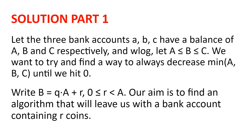Let the three bank accounts A, B and C have a balance of A, B and C respectively, and without loss of generality, let A be less than or equal to B be less than or equal to C. We want to try and find a way to always decrease the minimum of A, B and C until we hit 0. And when we hit 0, we are done, as that means we have transferred all the money into two bank accounts. Consider writing B as Q times A plus R, where R is greater than or equal to 0 but less than A — so R is just the remainder when B is divided by A. Our aim will be to find an algorithm that will leave us with a bank account containing R coins, and then we will be done, as we will always be able to decrease the minimum of A, B and C until we hit 0.